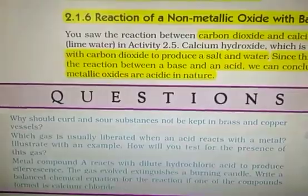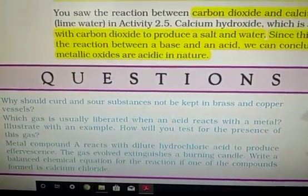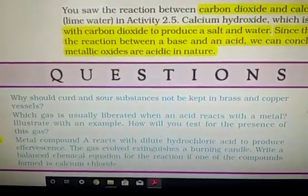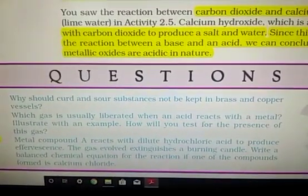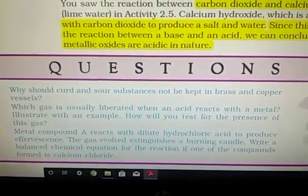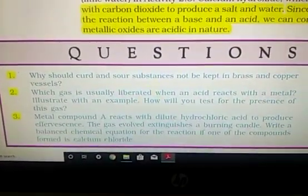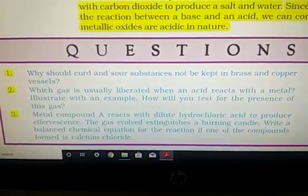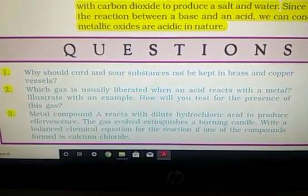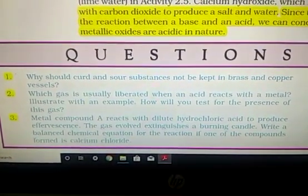Question number one exercise. Why should curd and sour substances not be kept in brass and copper vessels? Listen very carefully. Your curd and sour substances are acidic in nature. Acidic in nature it means they have the free H plus ions. These H ions react with the metallic surface and form the compounds. So they make the food poisonous and your food become bitter in taste. So this is the reason we should not kept our sour substances, curd etc, in the metallic reactive metallic utensils.